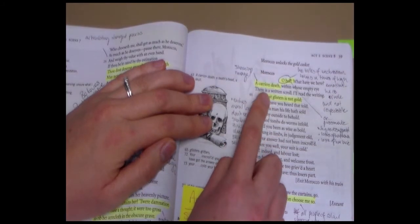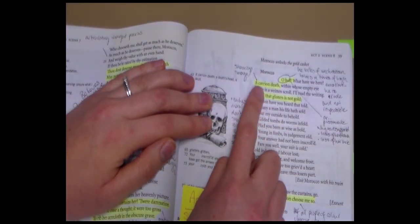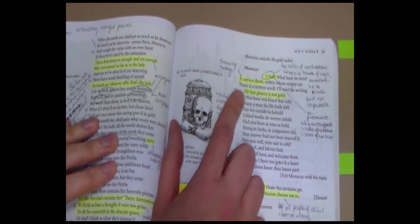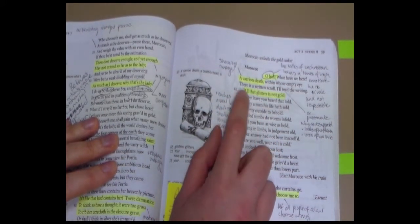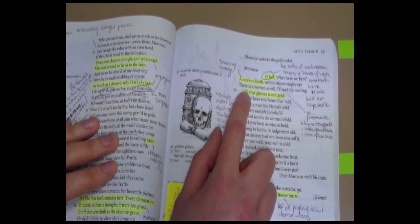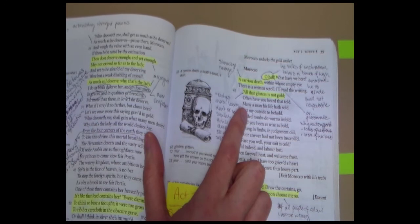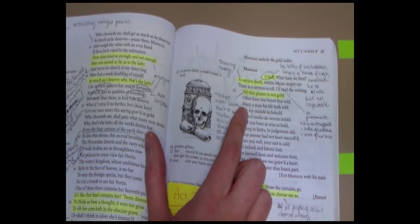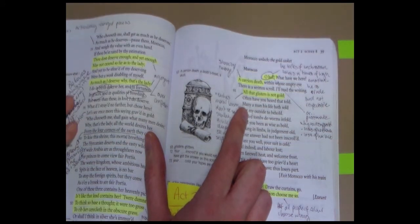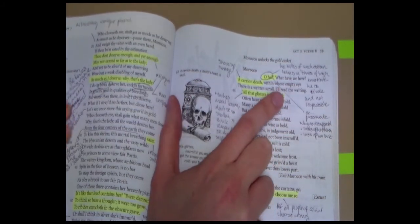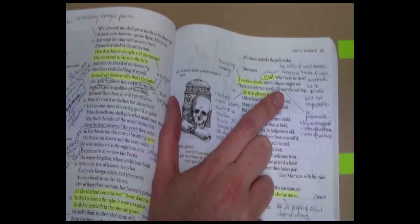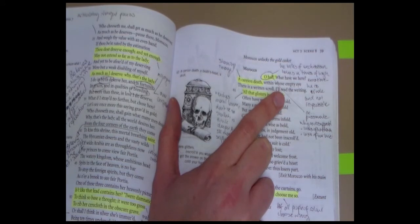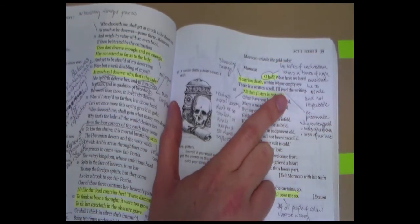As Morocco opens the gold casket, we see that his language changes and he now starts to use highly emotive language. He's very passionate because he realizes that he's lost everything. He says, oh, hell, what have we here? A carrion death within whose empty eye there is a written scroll. So what he's actually been given is a skull. And inside the eye hole of the skull, there is a piece of paper and that delivers a message to him. It's quite unchristian language in this point when he says, oh, hell. But it's because he's so emotional. He's not, it's not that he's deliberately trying to be rude. He's just quite upset because he's lost the opportunity to marry Portia and the opportunity to marry anybody else.